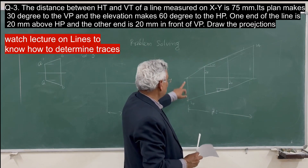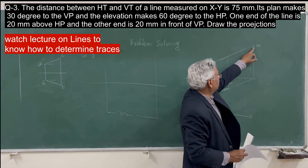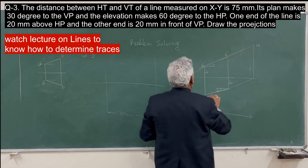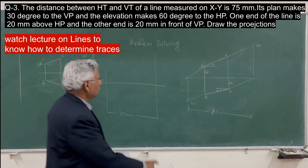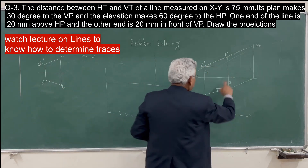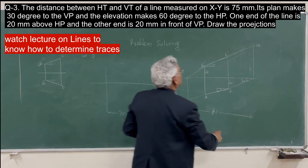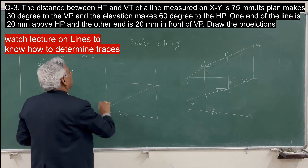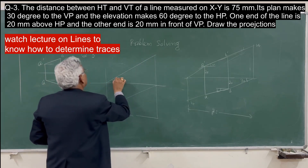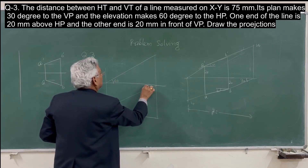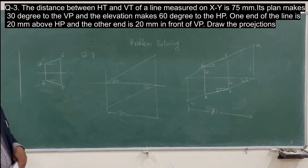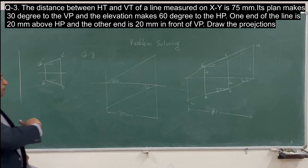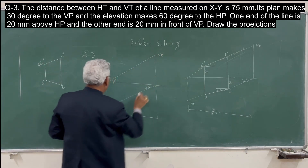If you join this point to the vertical trace, you get a line. From the ground point of the horizontal trace, draw a line at 30 degrees and from the vertical trace point, draw a line at 60 degrees. At 20 mm above HP, A dash is here. At 20 mm in front of the vertical plane, you get point B.